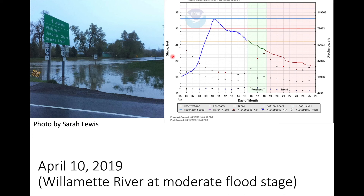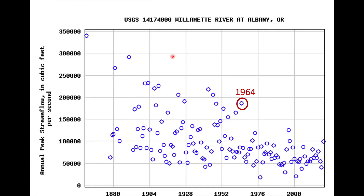Let's look at flooding on the Willamette River over time. This graph shows each year's peak streamflow from the USGS gauge at Albany, just downstream of Corvallis, going back to the 1800s through 2019. We can see the 1964 flood — well over 150,000 cubic feet per second — but that's small compared to the record flood in 1862, when peak flow was almost 350,000 cubic feet per second.